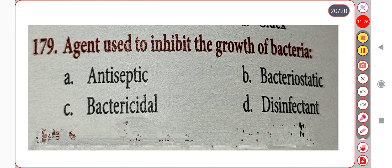Next question. An agent used to inhibit the growth of bacteria is: Option A. Antiseptic. Option B. Bacteriostatic. Option C. Bacteriocidal. Option D. Disinfectant. Correct answer is Option B: Bacteriostatic. Thank you.